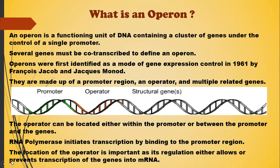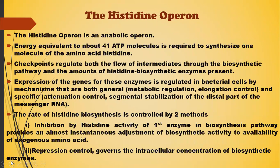Several genes must be co-transcribed to define an operon. Operons were first identified as a model of gene expression control in 1961 by Francois Jacob and Jacques Monod. They are made up of a promoter region, an operator, and multiple related genes, as seen in the figure below. The operator can be located either within the promoter or between the promoter and the genes. RNA polymerase initiates transcription by binding to the promoter region, and the location of the operator either allows or prevents transcription of the genes into mRNA.